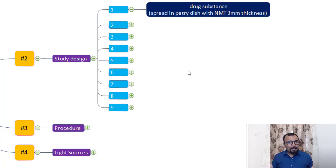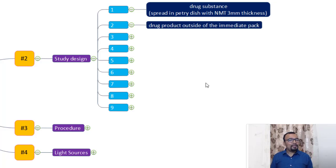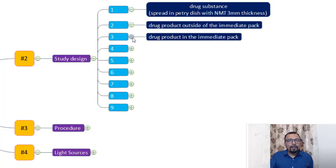Take the drug substance into a suitable container like a petri dish and spread it equally with not more than 3 mm thickness. The second point is drug product outside of the immediate pack. Once the API has been charged into the photostability chamber, take the drug product — like a tablet — remove the tablets from the blister and put them into a petri dish, then store in the photostability chamber. The immediate pack here is the blister.